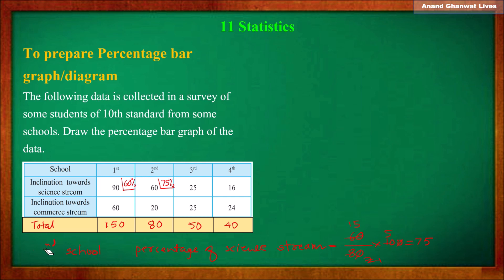In the third school: 25 students out of 50 are turned towards science faculty. Since 25 is half of 50, the answer is 50%. Let us verify: 25/50 × 100 — 5 × 1 = 50, 5 × 2 = 100, 25 × 2 = 50. So 50% of students are turned towards science faculty in the third school.